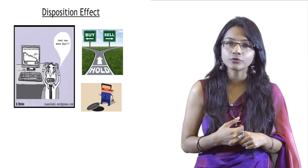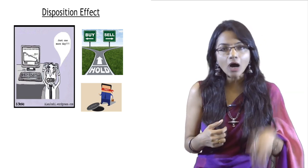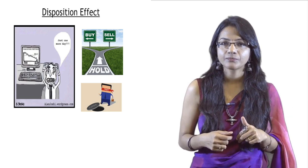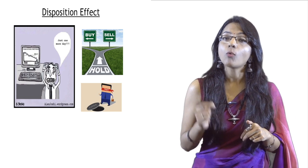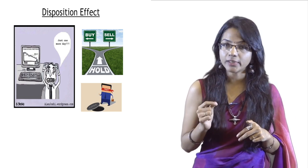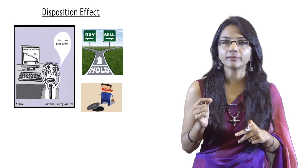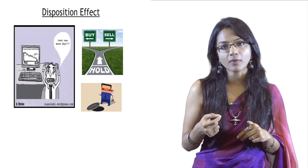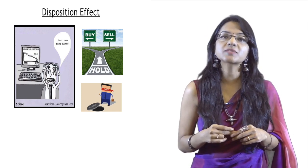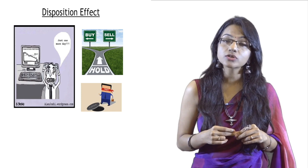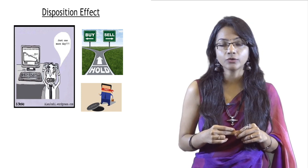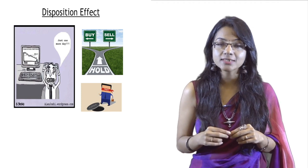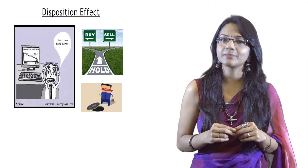Hersh Shefrin and Meir Statman documented the disposition effect in 1985. It states that investors in the stock market tend to quickly sell stocks which experience price appreciation, but cling to stocks which are declining. They want to book profits on profitable investments but avoid booking losses on losing securities, anticipating prices will rise eventually. This happens because of prospect theory and loss aversion bias. This also explains the price momentum anomaly — winners remain winners and losers remain losers — because investors hang on to loss-making stocks but book profits on rising ones.